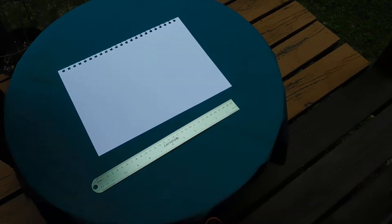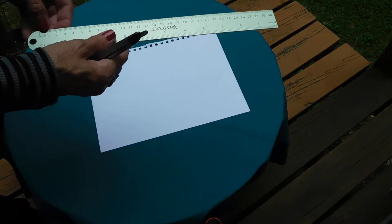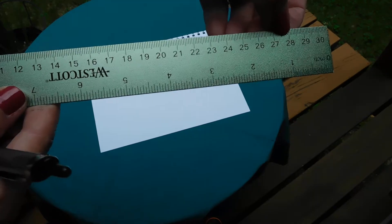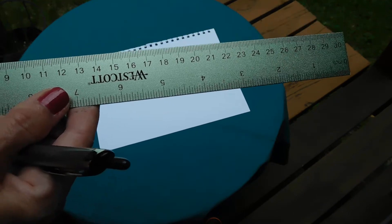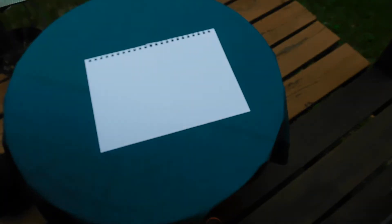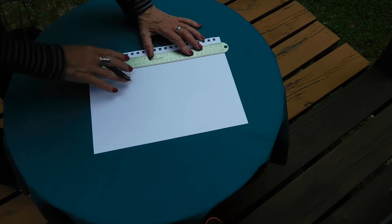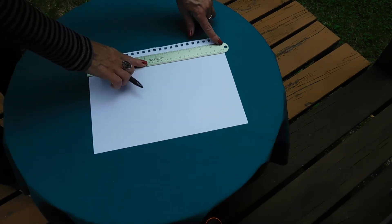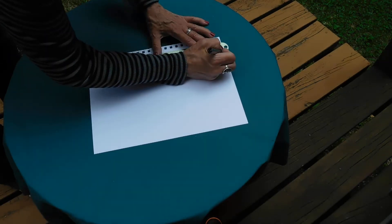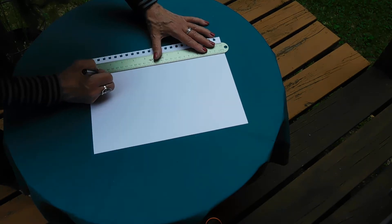We're going to draw a rectangle on the page that is 28 centimeters by 6 centimeters. So to make sure I'm getting it straight, I'm going to line this side of the ruler, the inch side, up with the little perforation on that side and then draw a line that's 28 centimeters.